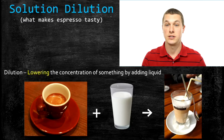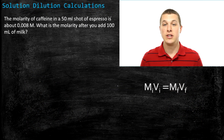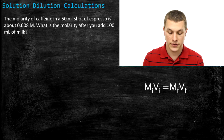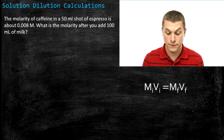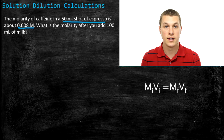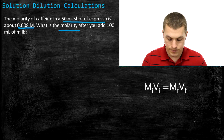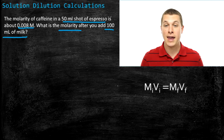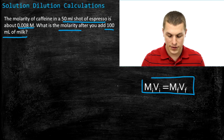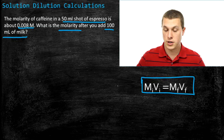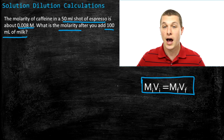To calculate the new concentration of caffeine, you need to know the volume of the espresso, the volume of the milk, and the concentration of caffeine in the espresso. The molarity of caffeine in a 50 mL shot of espresso is about 0.008 molar. There's a handy equation: M_i × V_i = M_f × V_f. That means take your initial molarity — the concentration you start with — multiplied by your initial volume, and that equals the final molarity times the final volume. You may also see this written as M1V1 = M2V2.